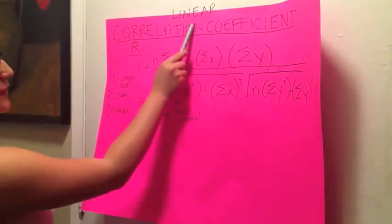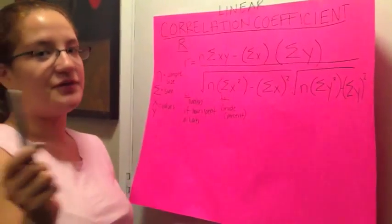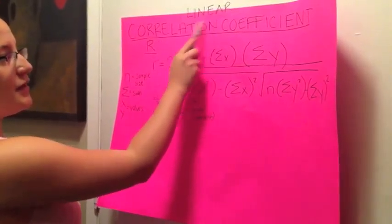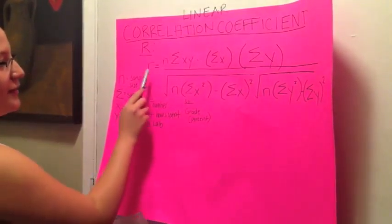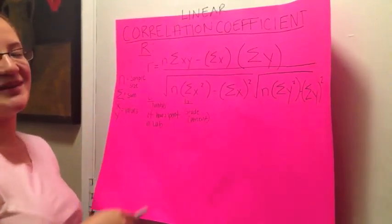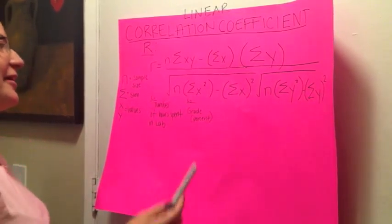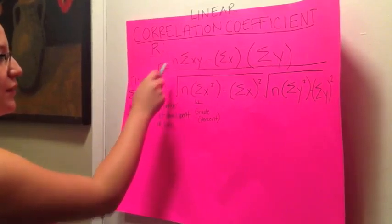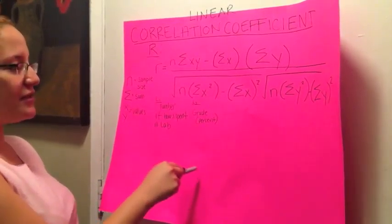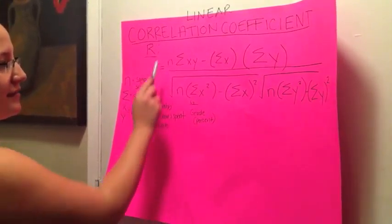Okay, so for this question, as we just showed you, we're trying to look for the linear correlation coefficient r. To get the r, we're going to use this big formula, which isn't really that scary. Your n is going to be your sample size, so you're going to count how many you have on each list, and that's going to be your n.